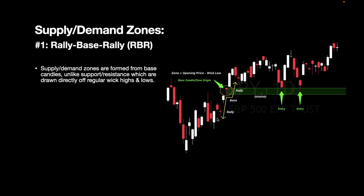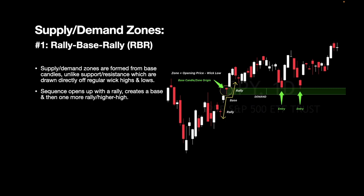For our first example we're going over a Rally Base Rally zone, and it's exactly how it sounds. The sequence opens up with a rally, it creates a base slash consolidation area, and then it makes a higher high and a breakout. Supply and demand zones are formed from base candles, unlike support and resistance which are drawn directly off regular wick highs and lows. With regular support and resistance, you're usually adding just a line at a wick high or wick low, not focusing on base candles.